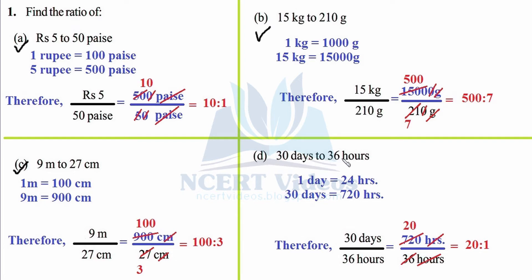Part (d): 30 days to 36 hours. The units are not the same, but 1 day contains 24 hours, so 30 days equals 720 hours. Writing the ratio: 720 hours divided by 36 hours — units cancel, making it unitless. We can reduce by 36: 36 twos are 72, so we get 20 over 1. The ratio is 20 to 1.